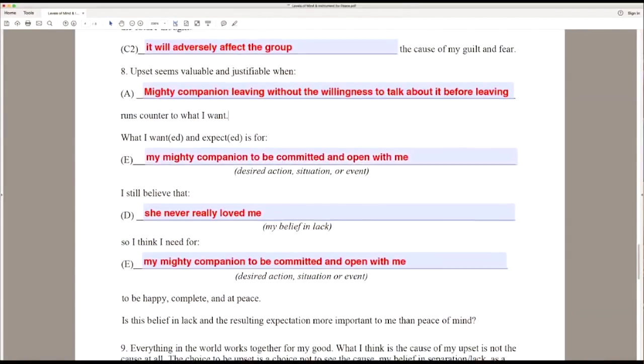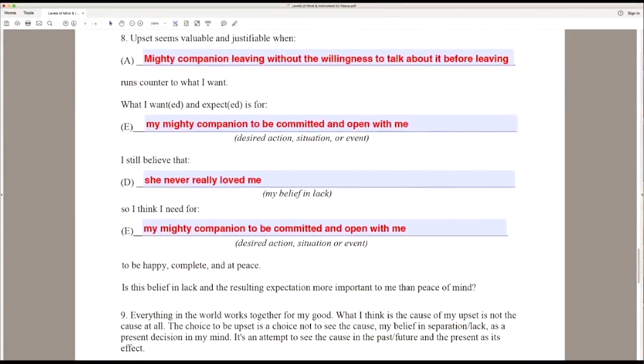This is actually where we get to see what we really want and why we want this to happen. If you believe that she never really loved me, you think you need to have her be committed and open with me. Do you see that in this particular part of the process you wouldn't even have to look at this belief if she hadn't left?